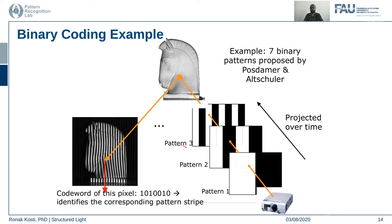Here is another good example with eight different patterns. For a particular pixel: on, off, on in the first three, then up to the seventh pattern giving a code like zero-zero-one-zero. These seven binary patterns are superimposed on the image one by one. In the beginning, the pattern is just white and black — half the image white on the left, half black on the right. For the first pattern, the tracked point belongs to the white stripe. The codeword for that pixel across all seven patterns will be one-zero-one-zero-zero-one-zero, which identifies the corresponding pattern uniquely.